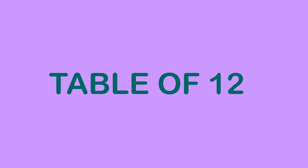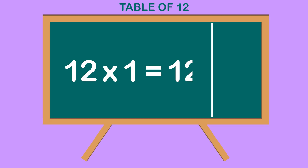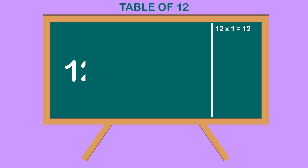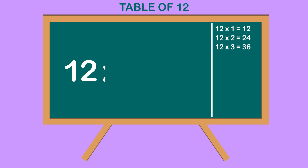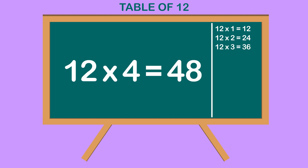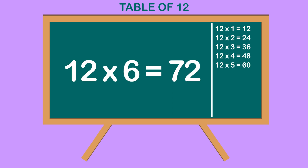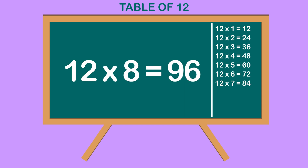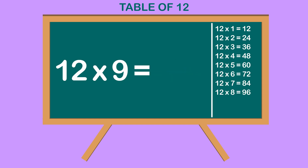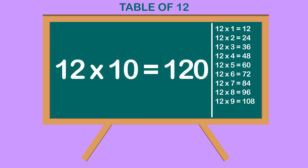Table of 12. 12 1s are 12. 12 2s are 24. 12 3s are 36. 12 4s are 48. 12 5s are 60. 12 6s are 72. 12 7s are 84. 12 8s are 96. 12 9s are 108. 12 10s are 120.